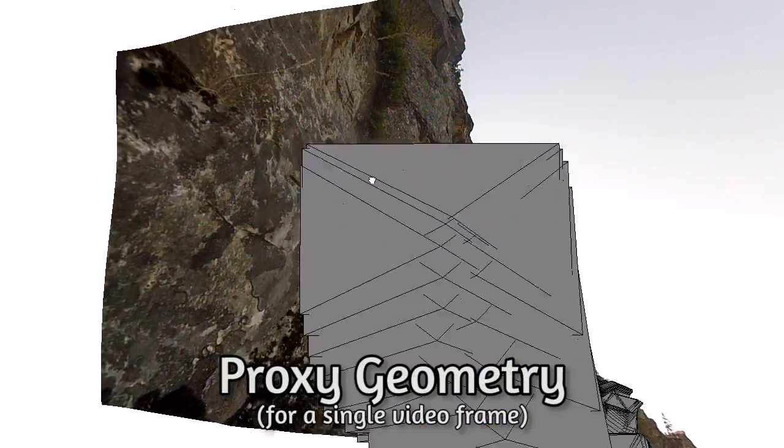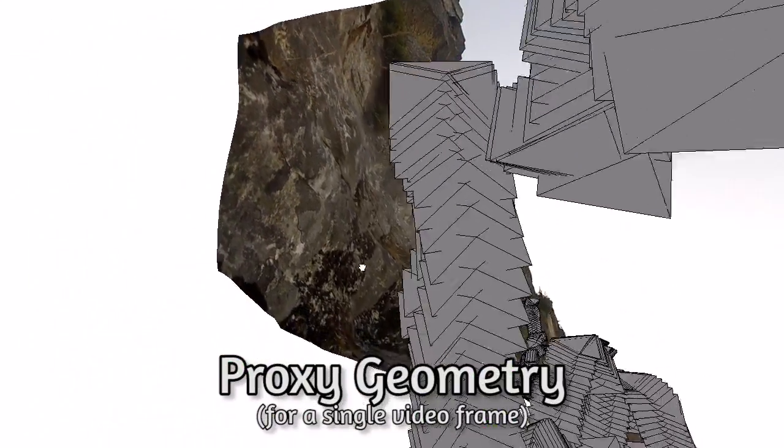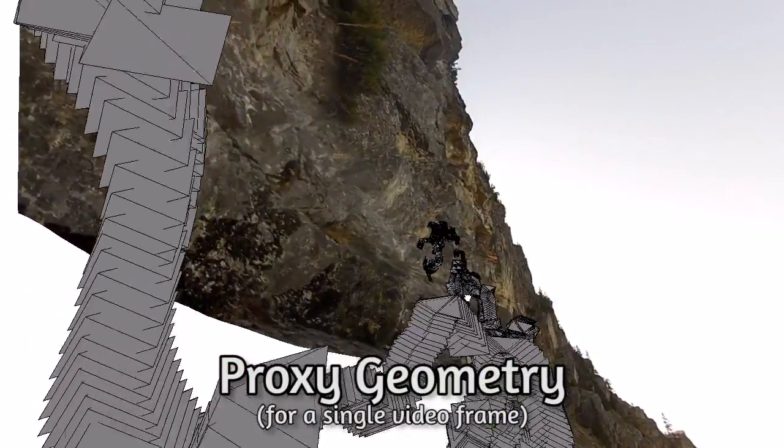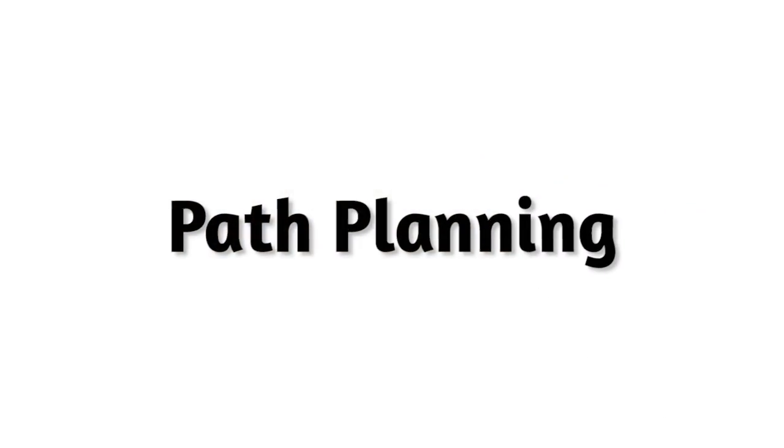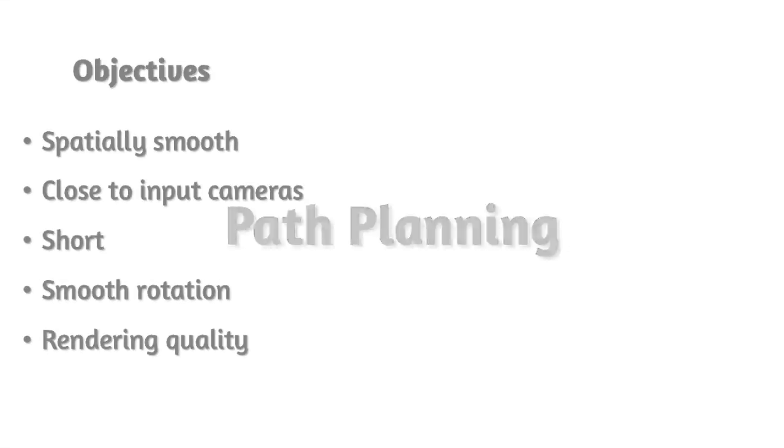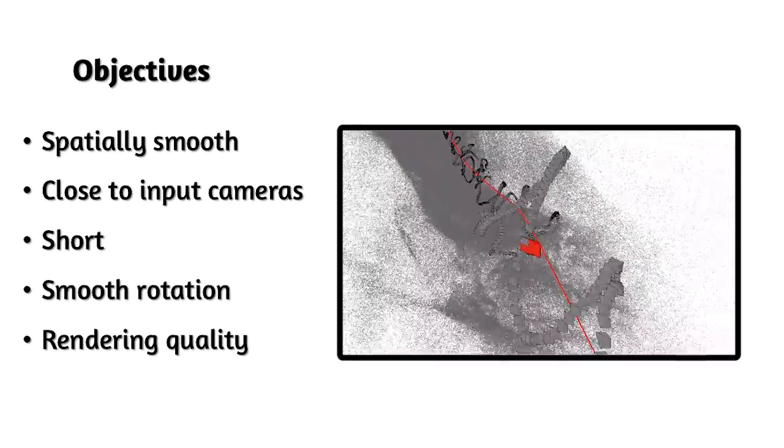Finally, we compute dense proxies by solving for smooth depth values that approximate the reconstructed sparse points. Having a reconstruction of the scene, our next goal is to choose a path for the output video. We have several conflicting objectives for such a path.